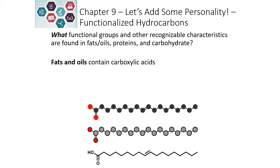We have previously looked at the carbon chain contained in our fatty acids. Now we're going to look at the carboxylic acid group. The reason they're called fatty acids is because they contain the carboxylic acid — a carbon double bonded to an oxygen and bonded to an OH group. These are the same structure, just written with either a ball and stick model or a line angle model, and those functional groups are what allow the fatty acids to attach together into the fats.